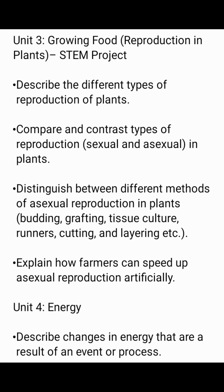Unit 3: Growing Food — Reproduction in Plants (STEM project). Describe the different types of reproduction of plants. Compare and contrast types of reproduction in plants. Distinguish between different methods of asexual reproduction in plants: budding, grafting, tissue culture, runners, cutting, and layering. Explain how farmers can speed up asexual reproduction artificially.